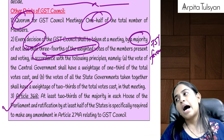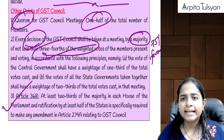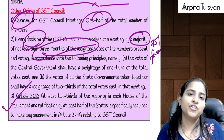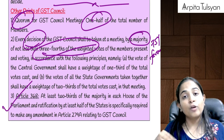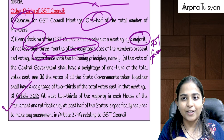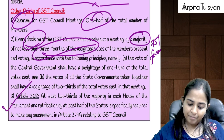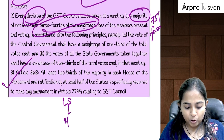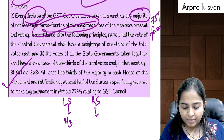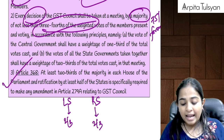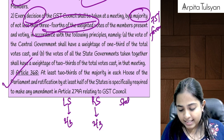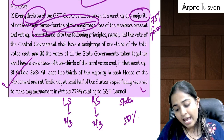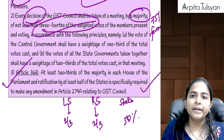Last one is Article 368 — this is not a new article. But they said in this article that if you want to do any changes in the GST Council or its constitution, that can be done by three levels of approval: first, go to Lok Sabha and take two-thirds members' approval; then go to Rajya Sabha and take two-thirds members' approval; and then go to the states — at least 50% of the states should say yes. Only after that can the changes be done.